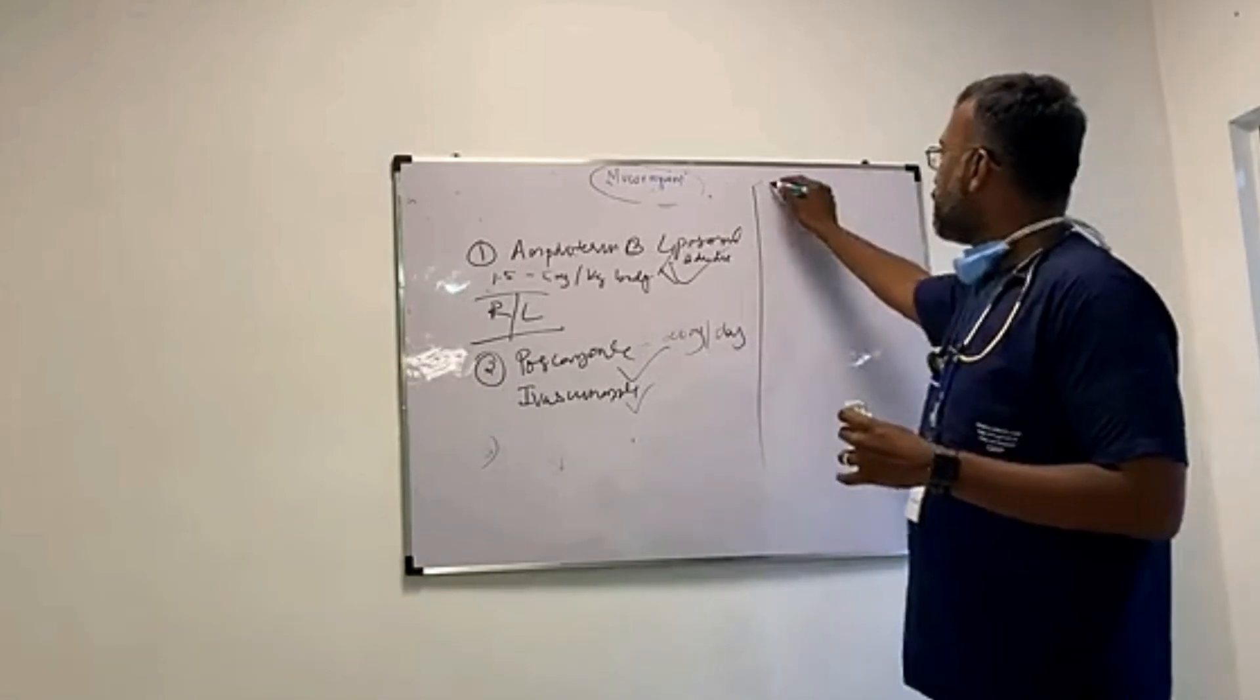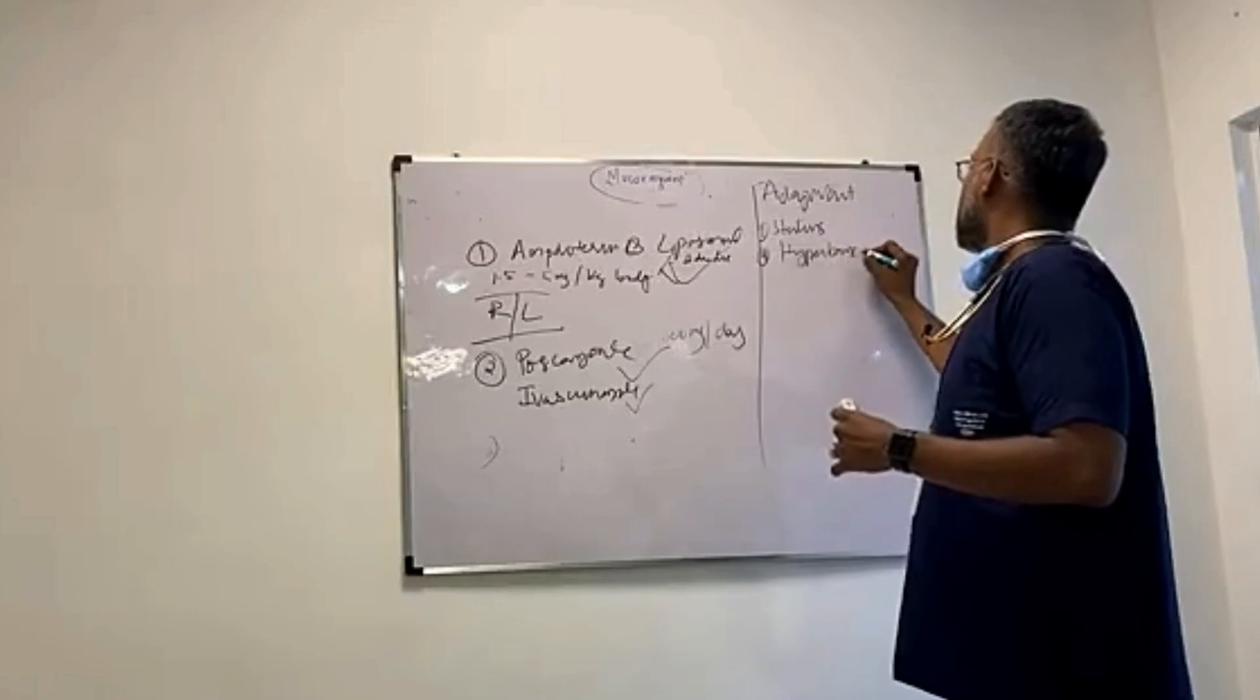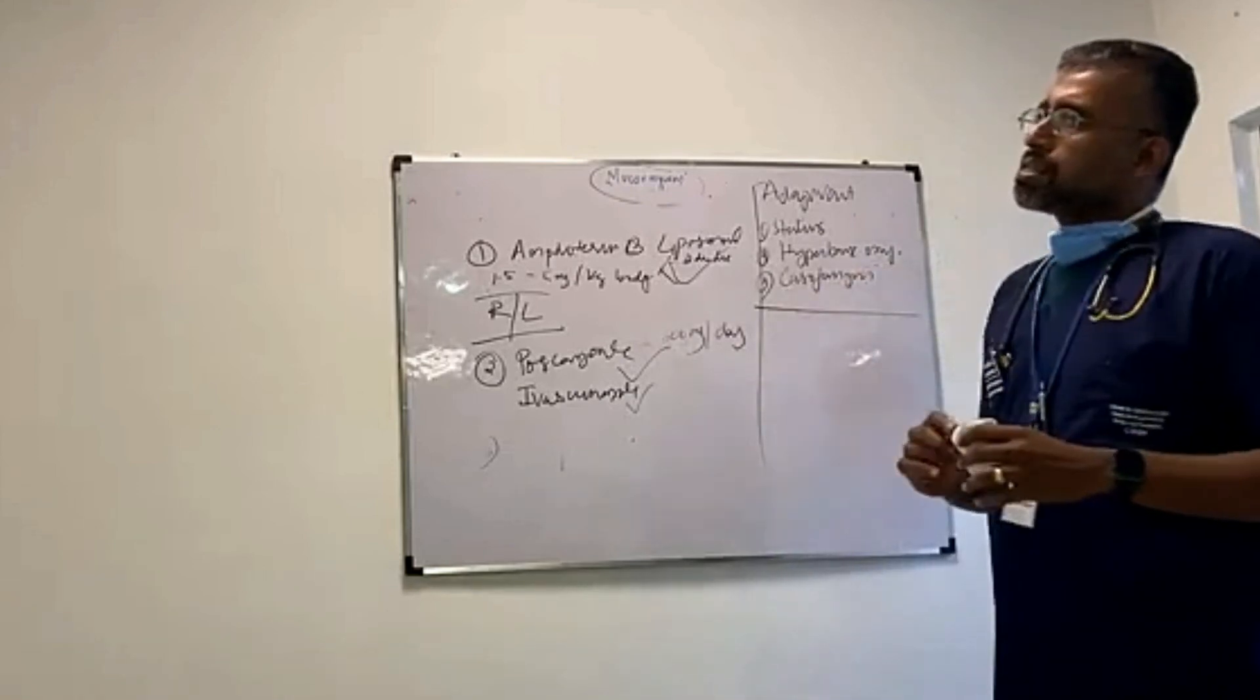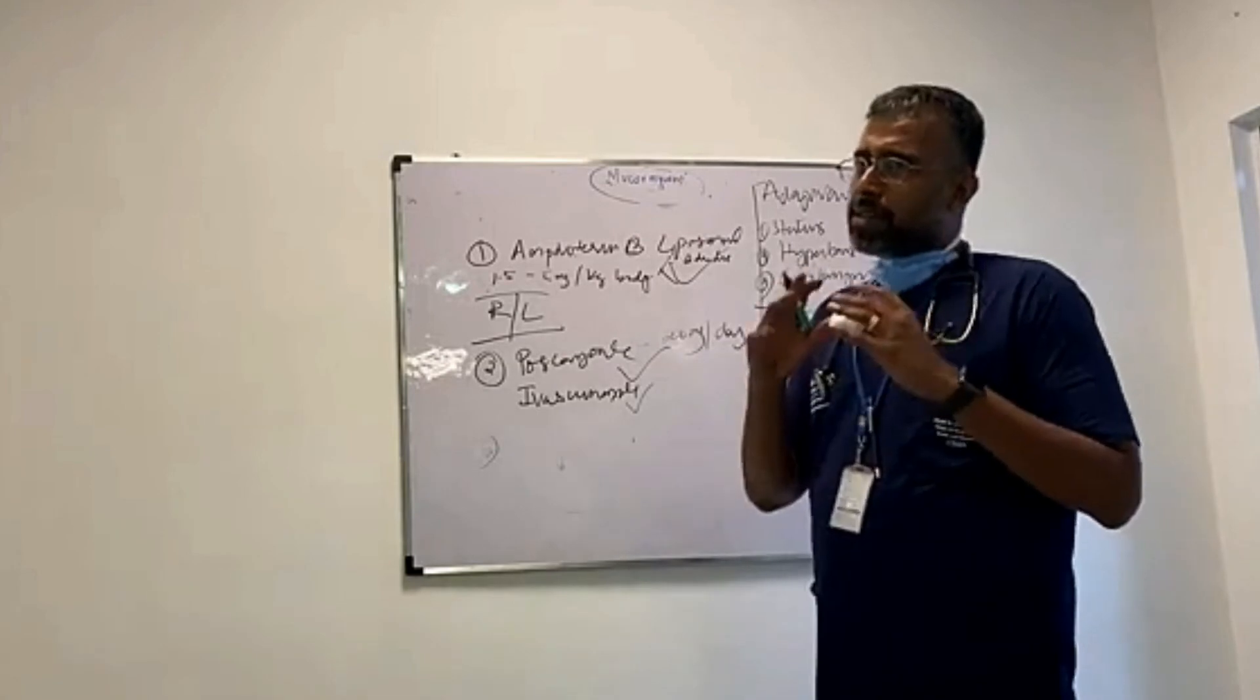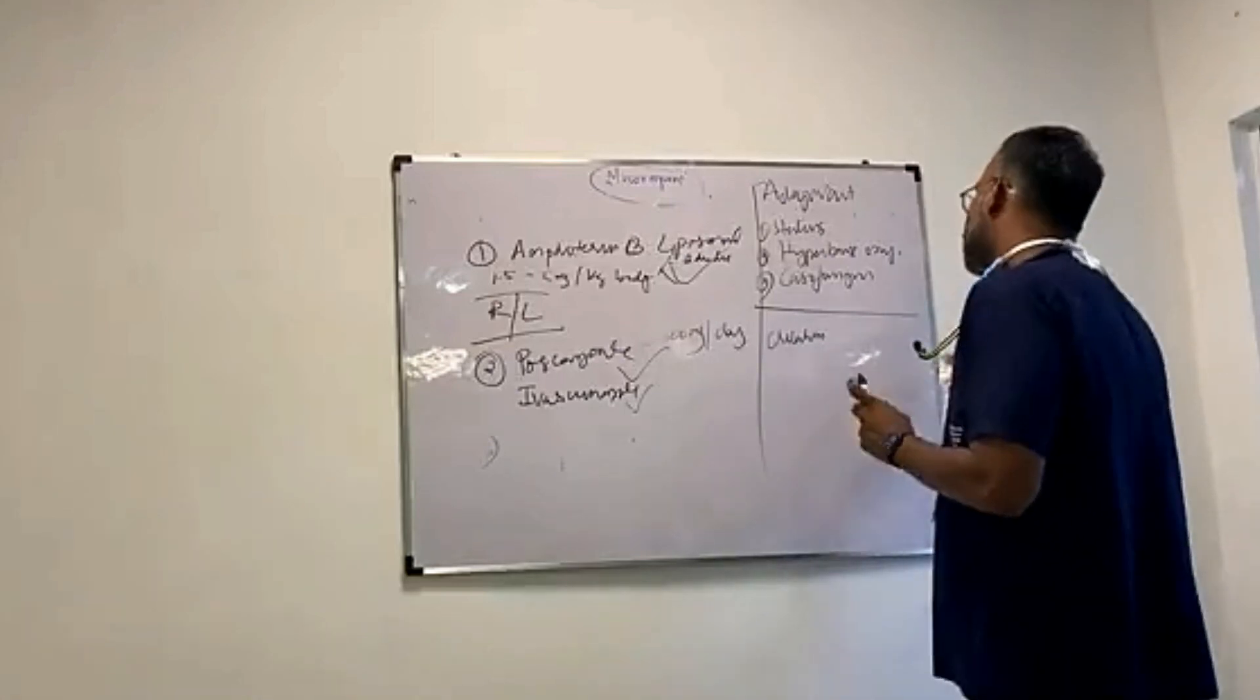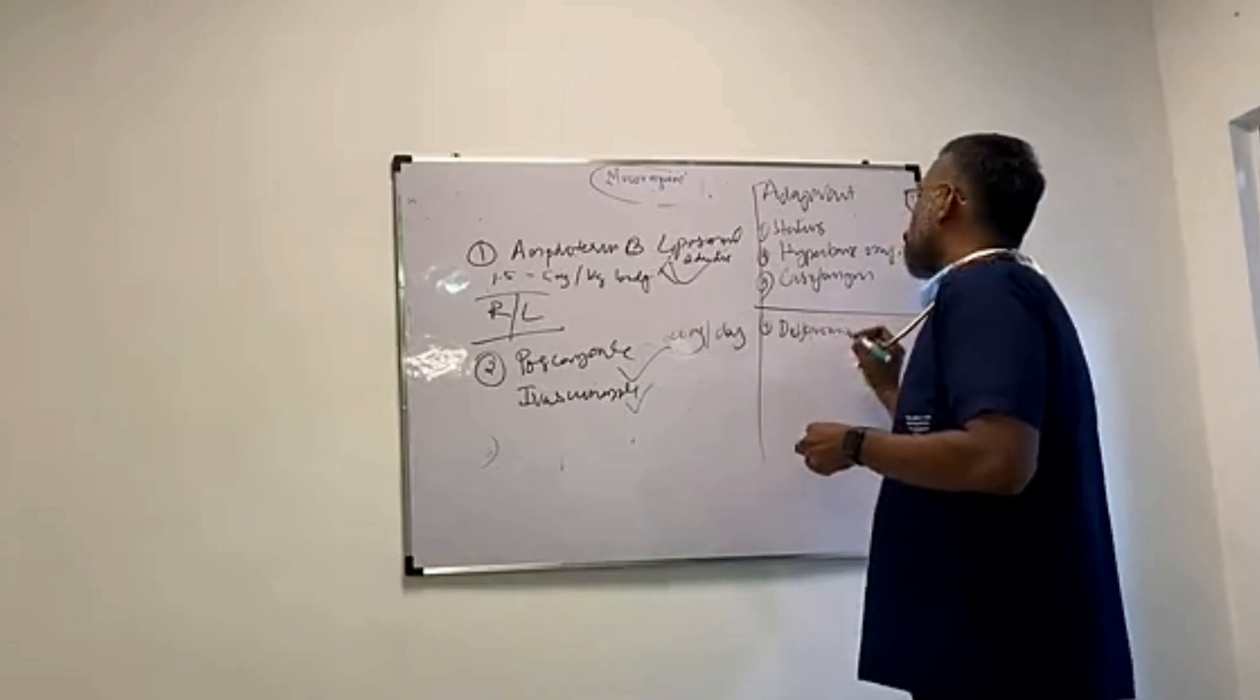In this adjuvant therapy, there are statins, there is hyperbaric oxygen therapy, and then there is caspofungin. There is a controversy whether chelating agents like deferoxamine are useful. I went through a journal where it clearly says that chelating iron agents like deferoxamine improve the results only in animals and not in human beings. So, depending upon your institution, you can choose to use deferoxamine as an adjuvant or not.